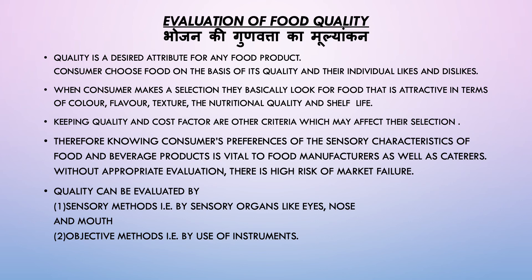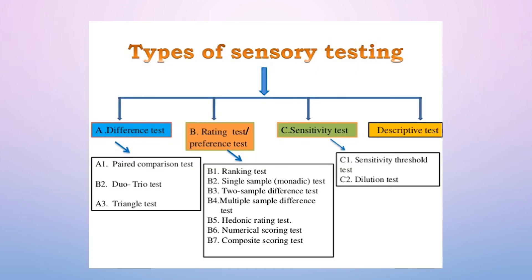Quality of food can be evaluated by two types of methods. First, sensory methods — that is, by using sensory organs such as eyes, nose and mouth. Second, objective methods, which is done by the use of various instruments. This slide shows different types of sensory tests used in the food industry, performed using the human sensory organs. These tests are performed usually by a panel of food inspectors and include difference tests, rating tests, sensitivity tests and descriptive tests.